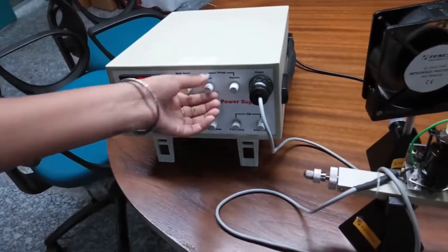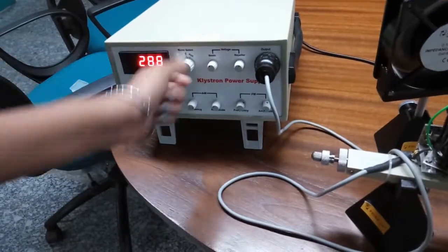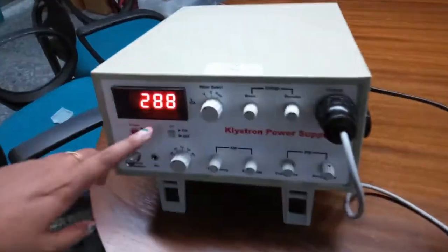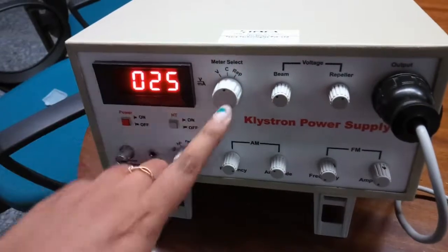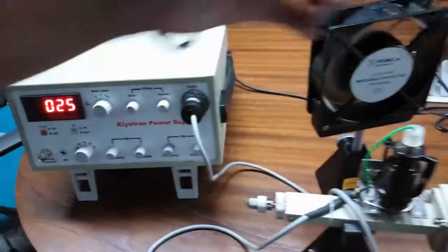Set the beam voltage around 300 and set the current around 25 milliampere.